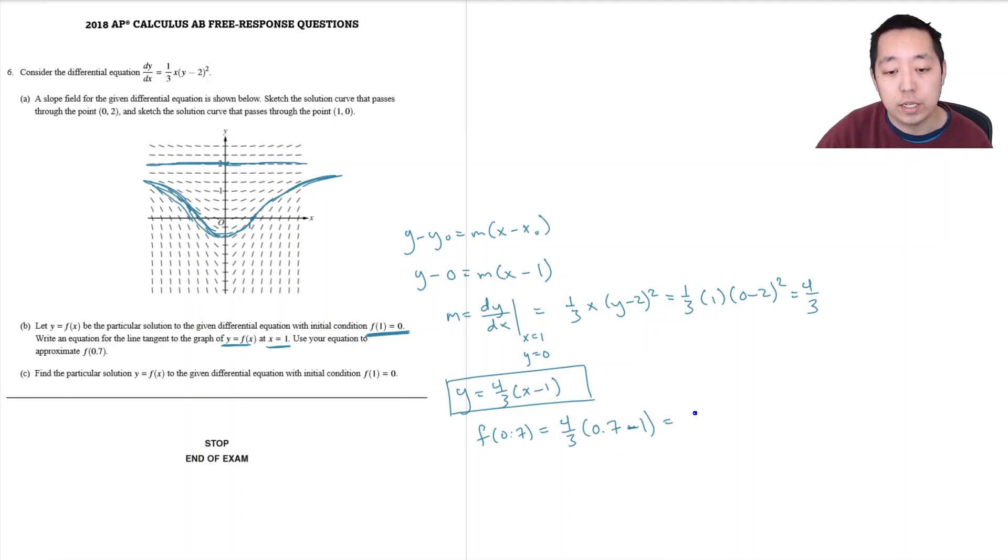That's four thirds times minus 0.3. This cancels to be 10, so minus 0.4.